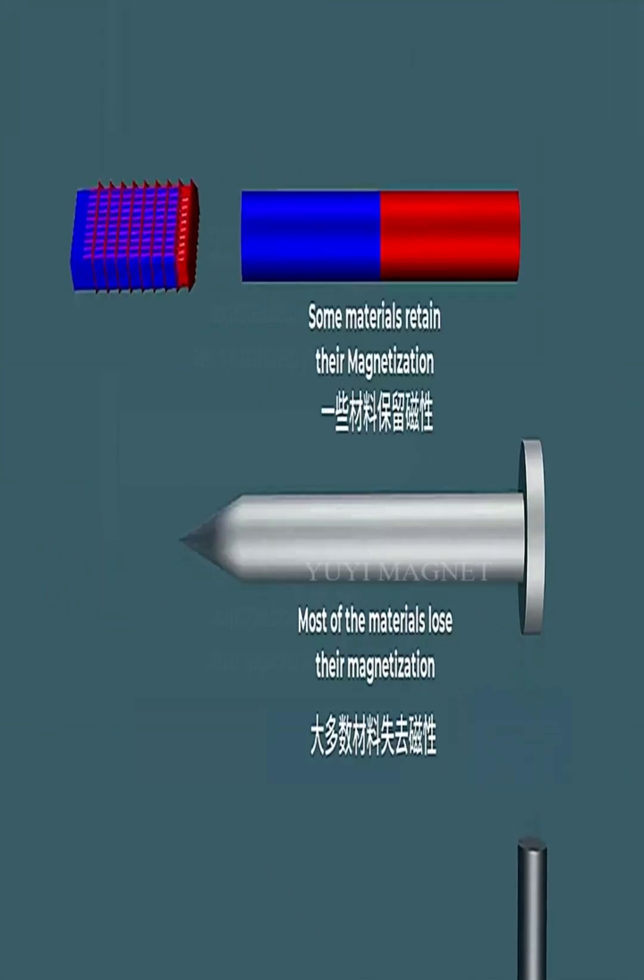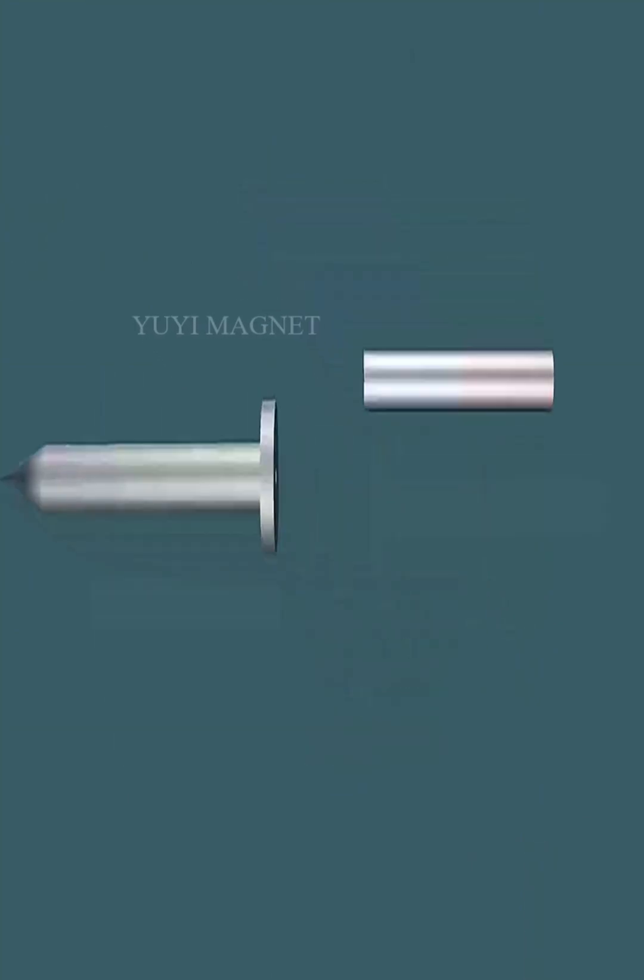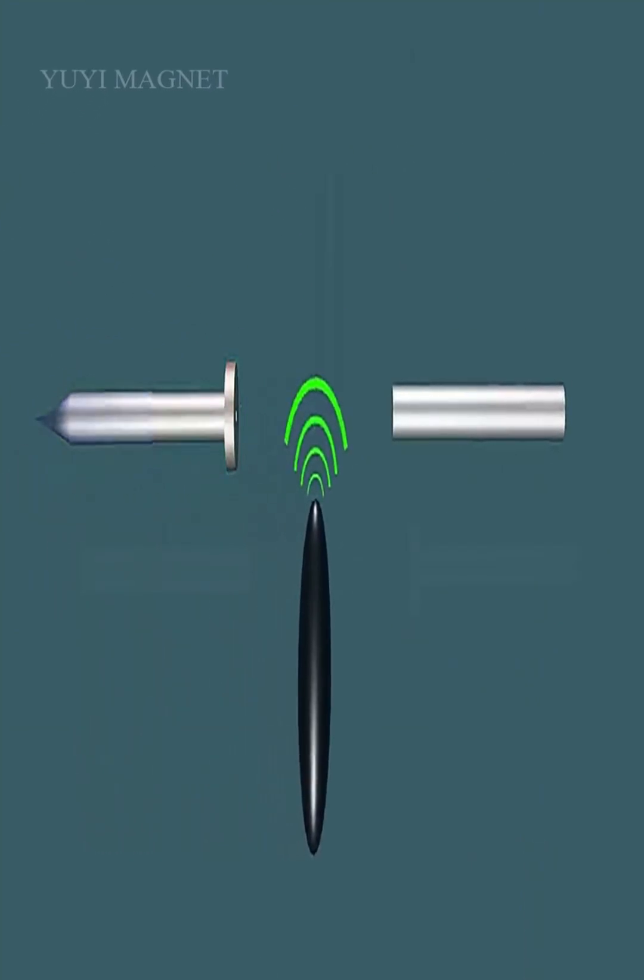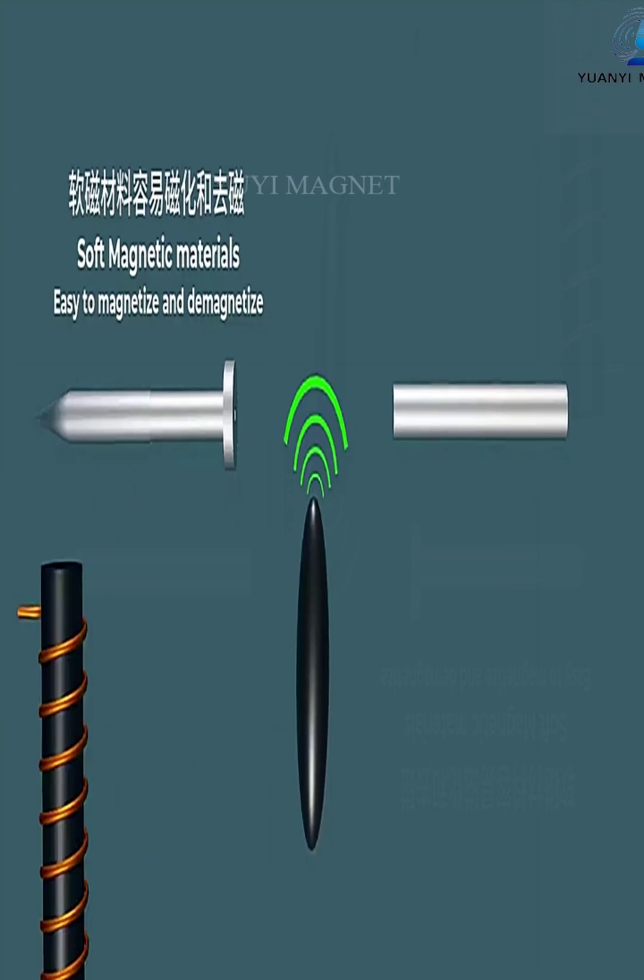It can also be electrons orbiting around the atomic nucleus, or electrons spinning on their own axis.